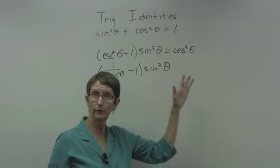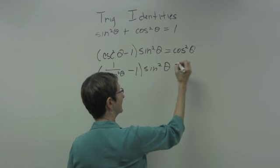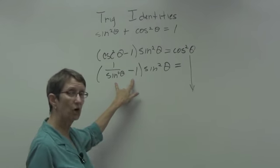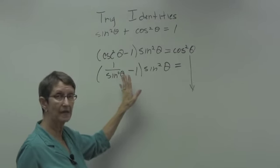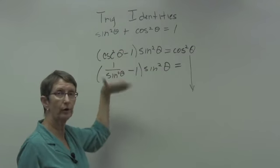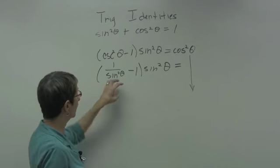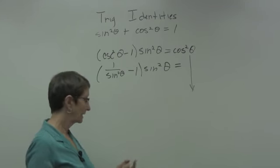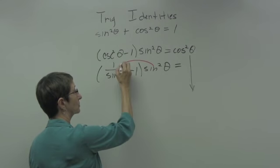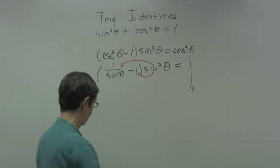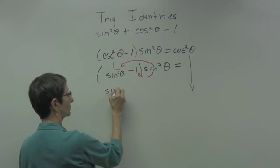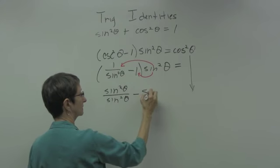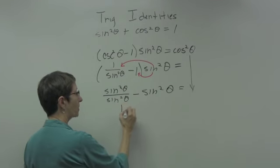You do not work back and forth — you only stay on one side. I have 1 over sine squared theta minus 1, and sometimes you'll need to get a common denominator, say to write this 1 as sine squared over sine squared. I don't really need to do that this time though, because this whole parenthesis is multiplied by sine squared, so I'm going to distribute the sine squared through. Sine squared times 1 over sine squared of theta gives me sine squared theta over sine squared theta, minus 1 times sine squared, giving me 1 minus sine squared theta.